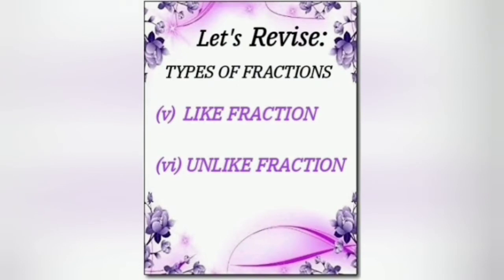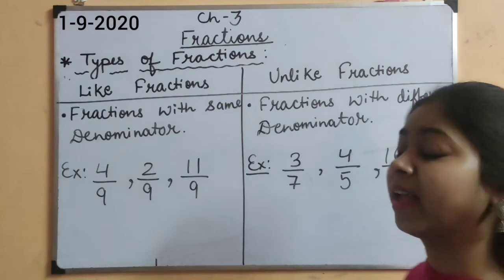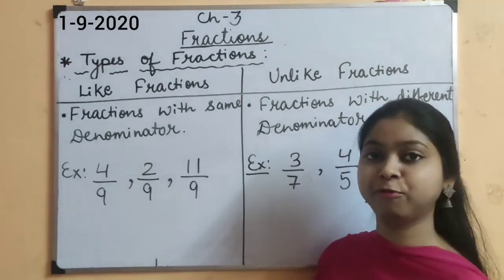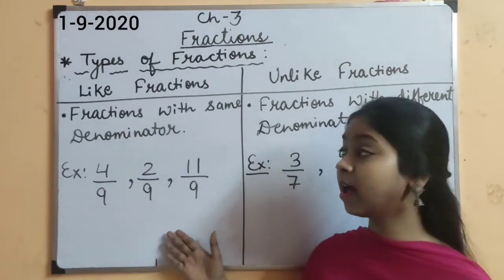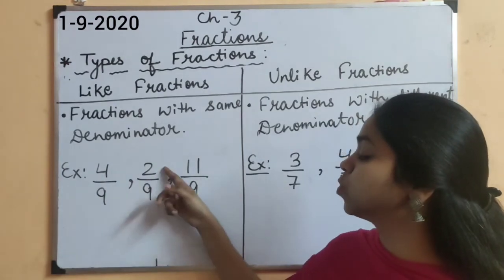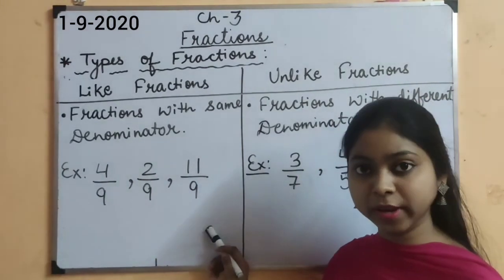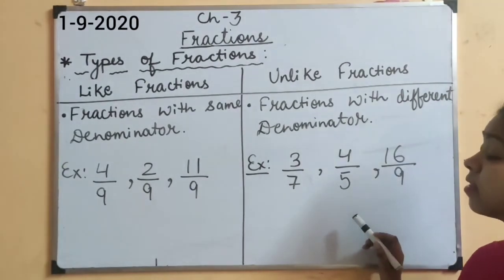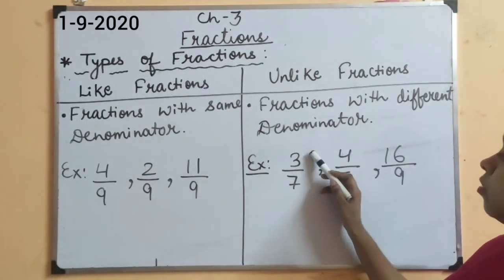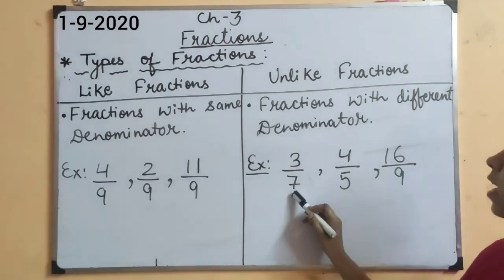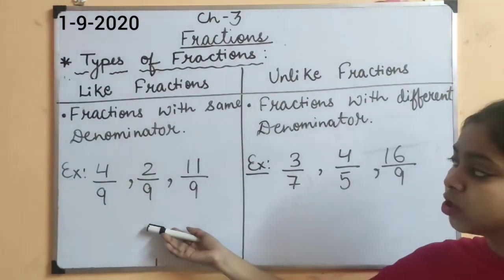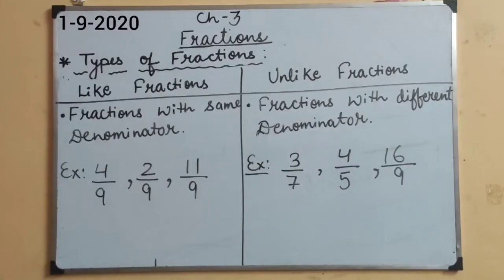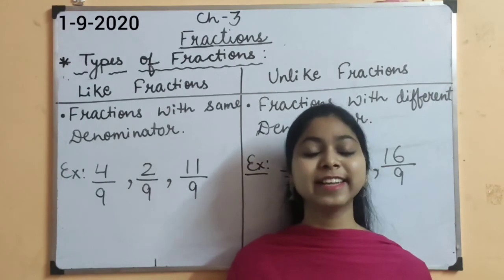Let's revise like and unlike fractions. When talking about a group of fractions, they are categorized into like fractions and unlike fractions. Fractions with the same denominator are like fractions — for example, 4 upon 9, 2 upon 9, 11 upon 9 all share the same denominator. Fractions with different denominators are unlike fractions — for example, 3 upon 7, 4 upon 5, 16 upon 9. I hope you have understood all the types of fractions very well.